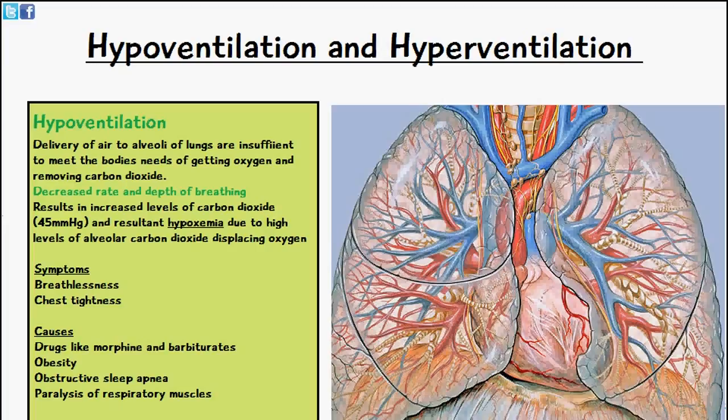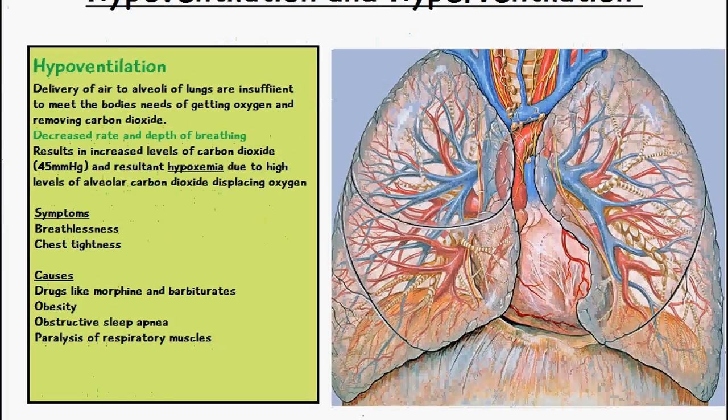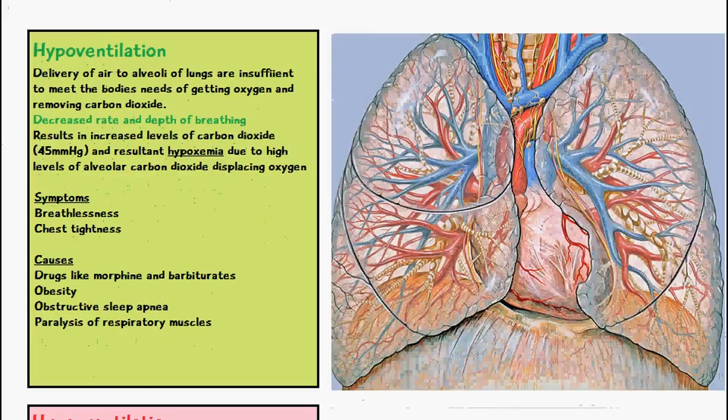The symptoms of hypoventilation are going to be breathlessness and chest tightness, and it's also a form of respiratory distress as well. The causes of hypoventilation are going to be drugs like morphine and barbiturates which depress the respiratory system, or the causes can be obesity, obstructive sleep apnea, and paralysis of respiratory muscles.